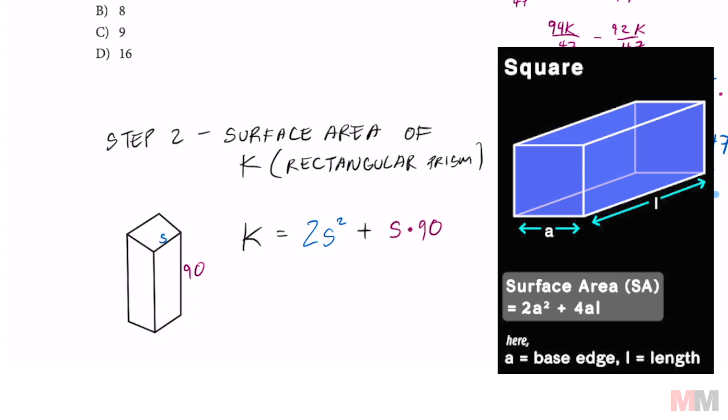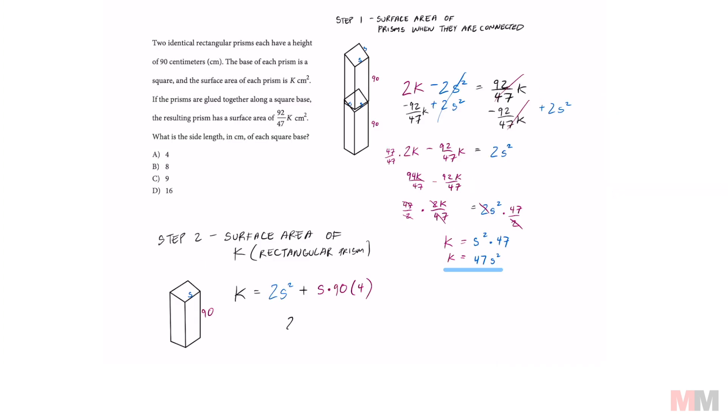But don't forget that there are four of those panels, two in the front and two in the back. So we're going to have to multiply that by four. Simplifying some stuff, that's going to be 2S squared plus 360S equals K.